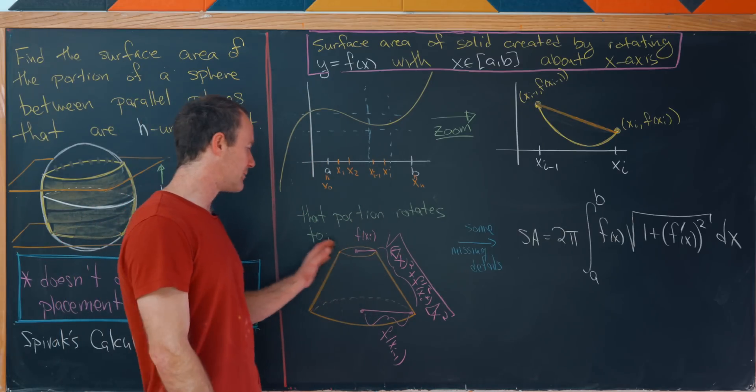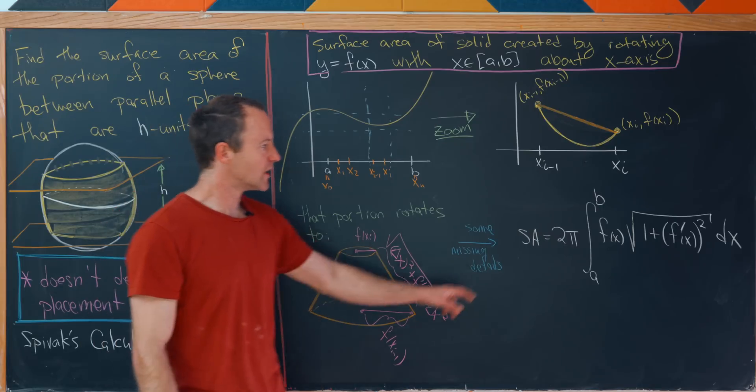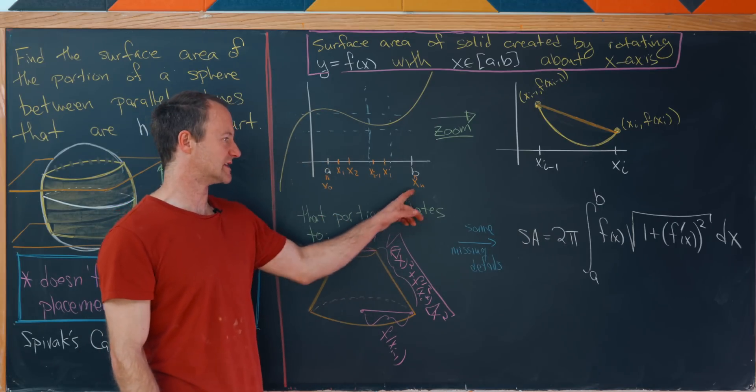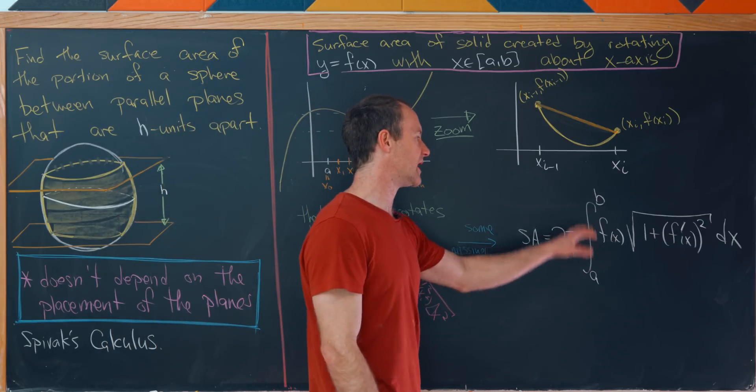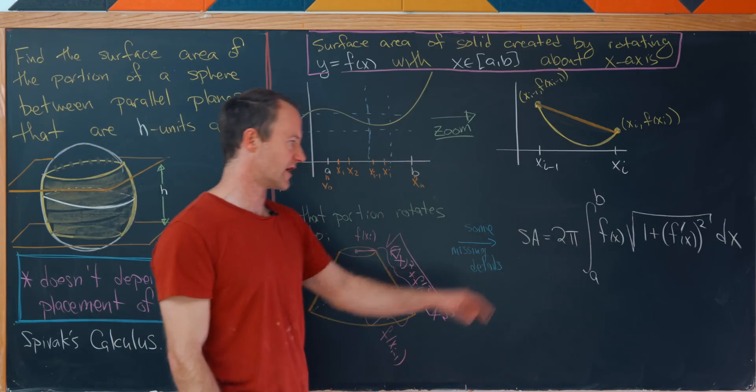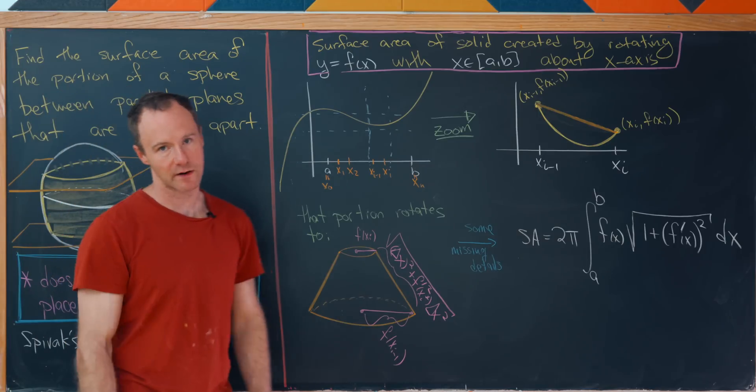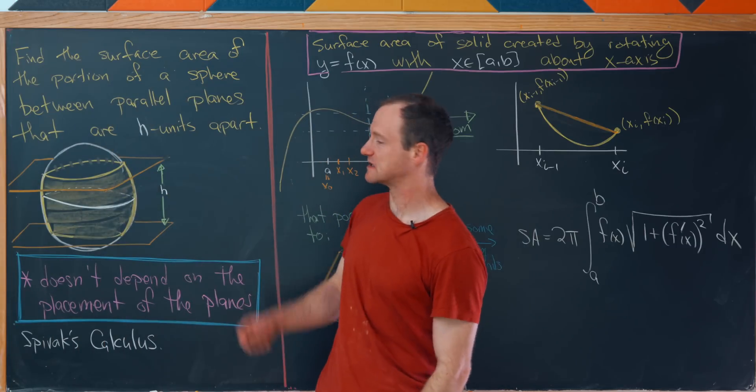And then if we add up all of these different surface areas created from this picture, we end up with the following integral. Of course, that's also after taking a limit as n goes to infinity. So we have the surface area is 2 pi, the integral from A to B of F of X times the square root of 1 plus F prime squared. Okay. So let's keep that in mind as we dive into our problem.